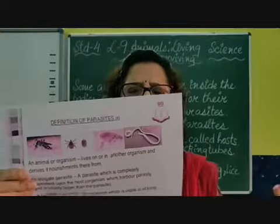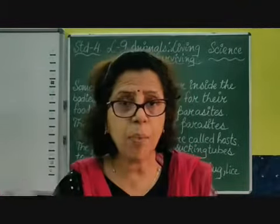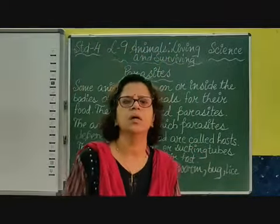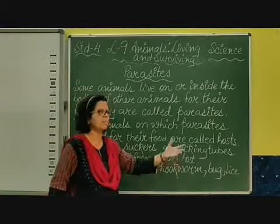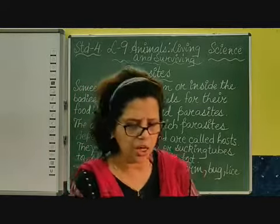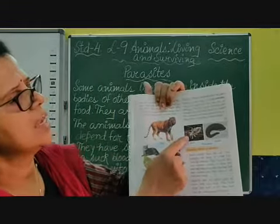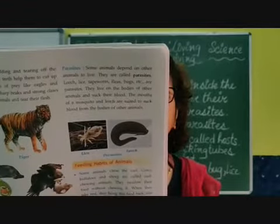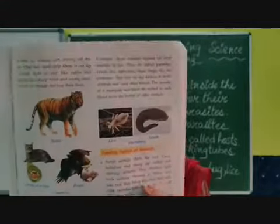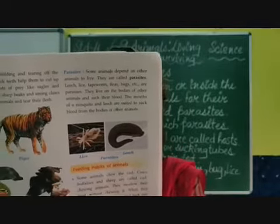You have different types of parasites like tapeworms and hookworms, lice, leeches, and bugs. You must have experienced bedbugs. Parasites include mosquitoes, leeches, hookworms, tapeworms, bugs, and lice. You can see lice in the head. Leeches are found on animals — on domestic animals you can see these parasites on their body, taking food from there.